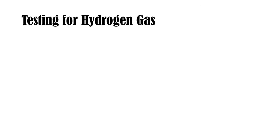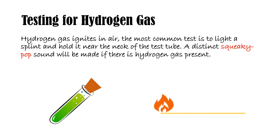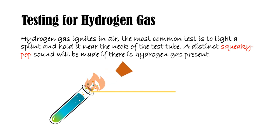We are now going to look at the most common way to test for hydrogen gas. As hydrogen gas ignites in air, the most common test is to light a splint and hold it near the test tube that you think your hydrogen gas is in. If you can hear a distinct squeaky pop sound, that means hydrogen gas is present.